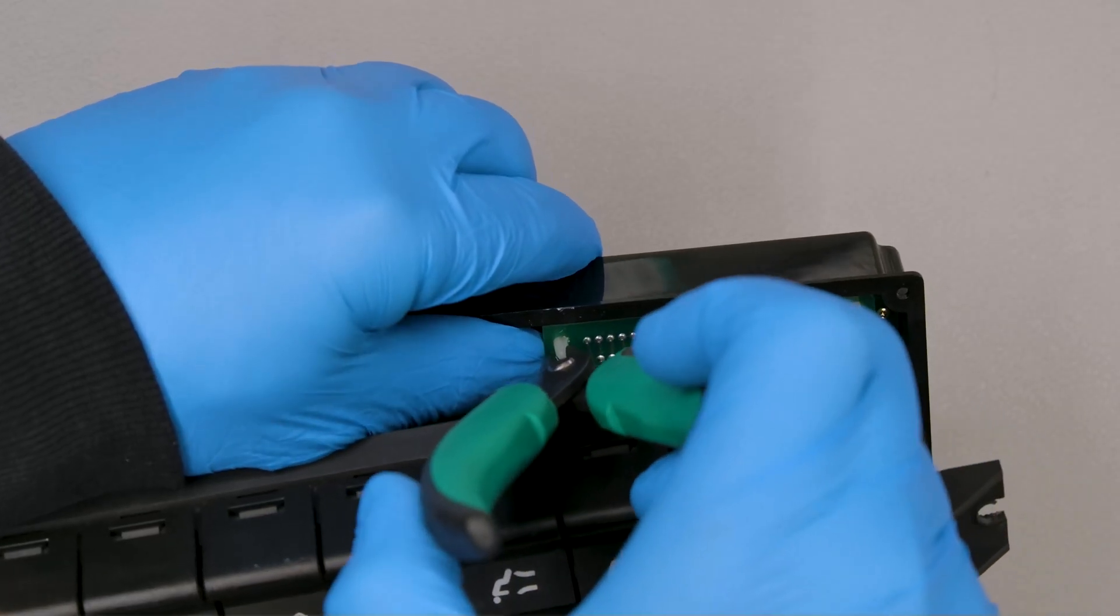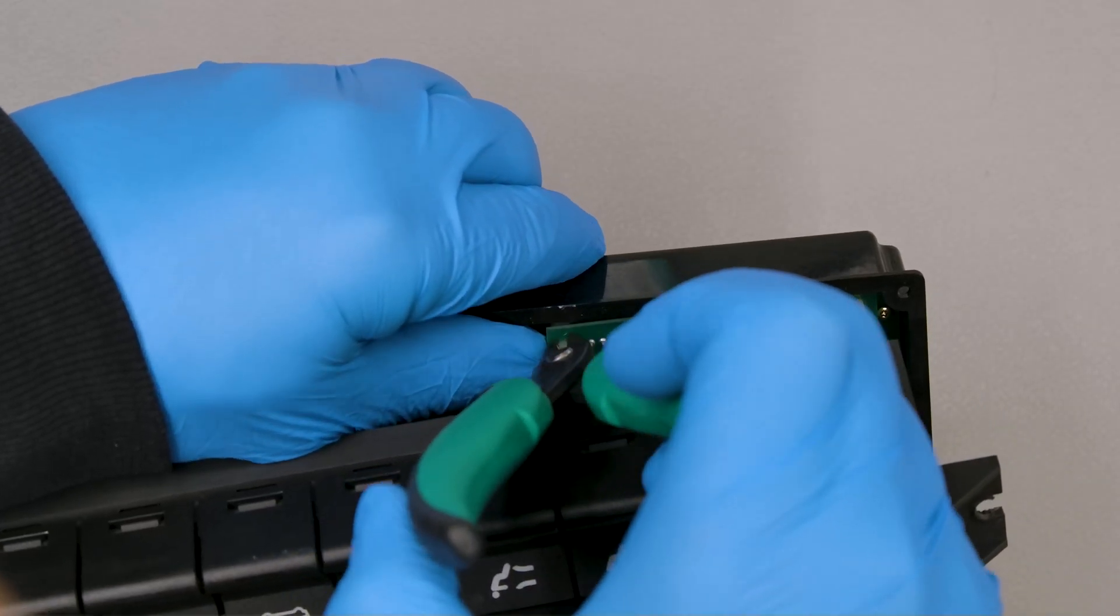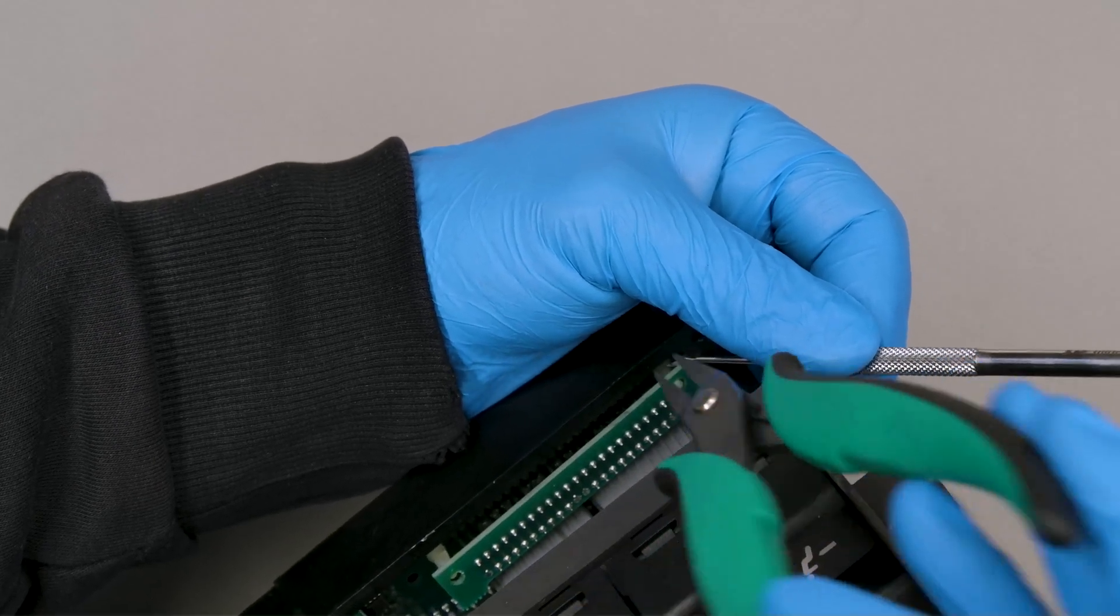With the head of the pliers and the curved tip tool, unhook the plastic clips to detach the connector as shown.